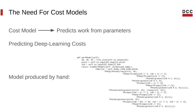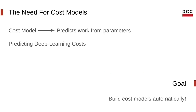These cost models are usually produced by hand, so an engineer will have to look at all those different implementations and write a cost model that has roughly this shape. This can be very tiresome for the engineer responsible, because they will have to read those large implementations of deep learning models and then write those cost models. So, to make this task easier, our goal in our work is to build cost models automatically.